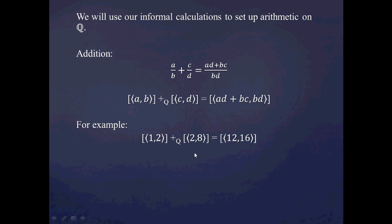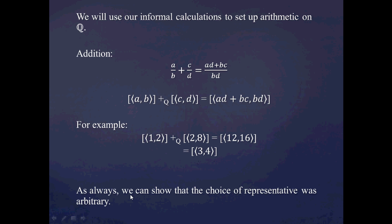As an example: (1, 2) plus (2, 8) — representing one-half plus one-fourth, which we know should be three-fourths. Computing: a·d + b·c = 1·8 + 2·2 = 12, and b·d = 2·8 = 16. So we get the equivalence class of (12, 16), which is indeed equal to the equivalence class of (3, 4). And the choice of representative is arbitrary — I could have picked (−2, −4) for one-half, or (4, 16) for one-fourth, and the calculation would still work out.